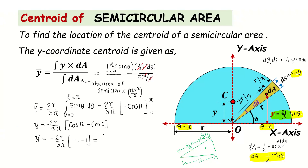So the y-coordinate of the centroid is y-bar = 4r/(3π). By following this simple procedure you can easily find out the centroid coordinate of a semicircle or the centroid of a semicircular area.